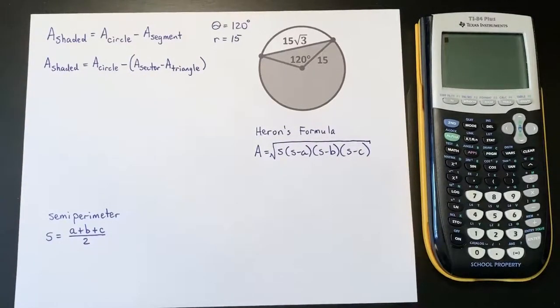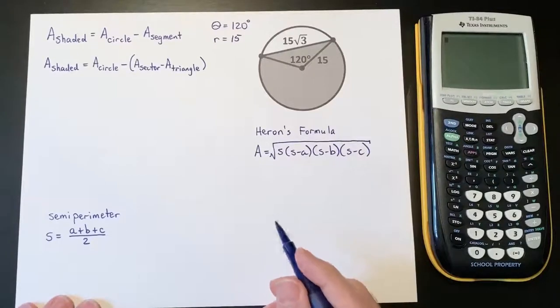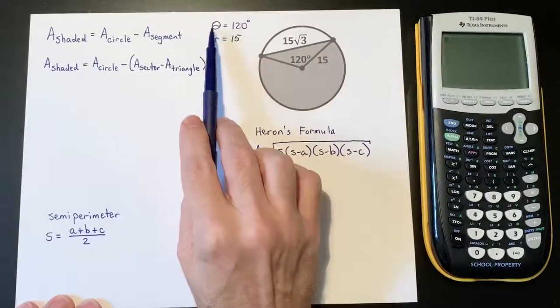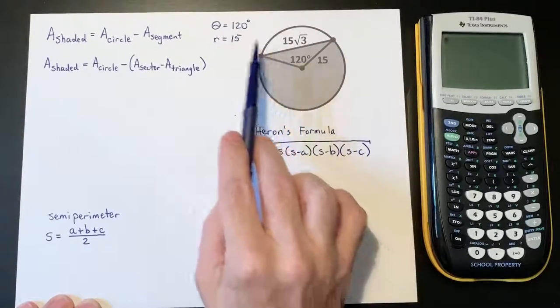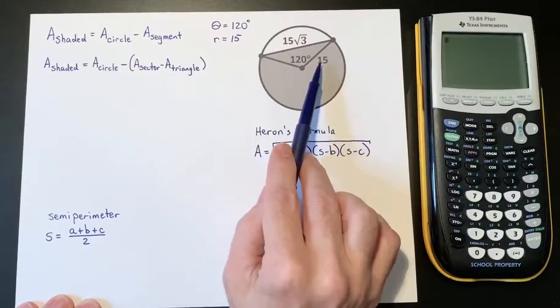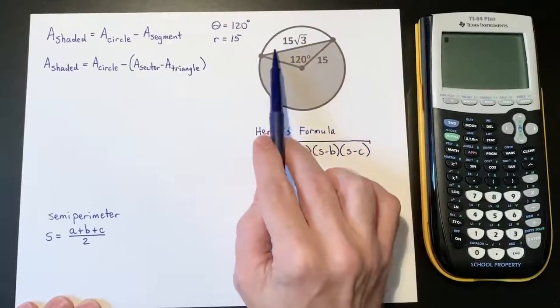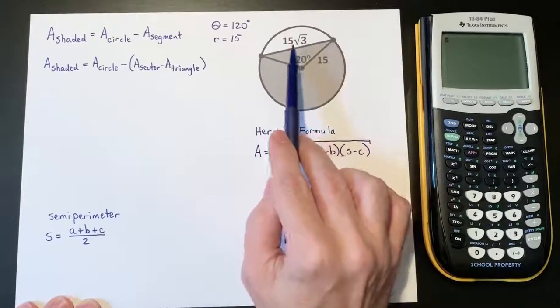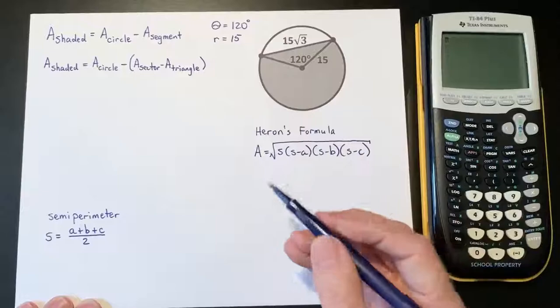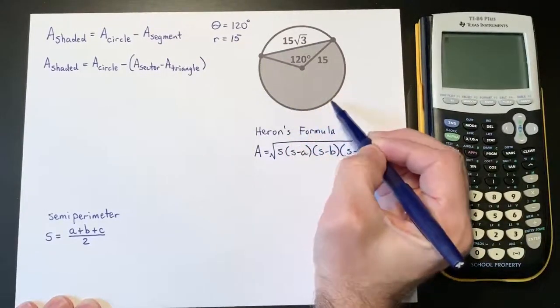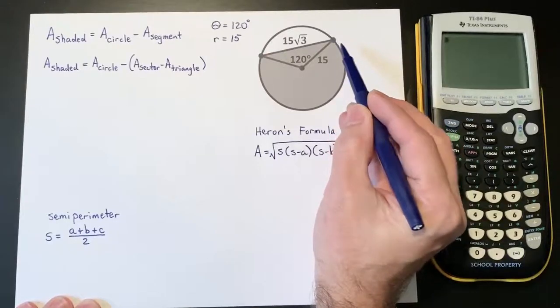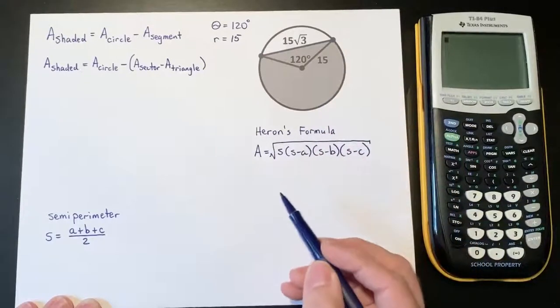As you can see I've written out a few things to help us get started. First of all, theta is the central angle, 120 degrees, and the radius is 15. I've also provided the length of the chord here, and just as a side note, this is actually a major segment because this arc is a major arc. We want to find the area of this shaded region.